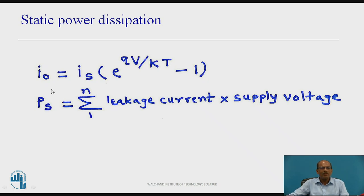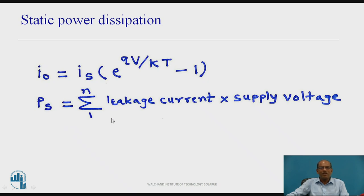The current through the diode is given by I₀ = IS × (e^(QV/KT) − 1), where IS is the reverse saturation current, Q is the electronic charge, V is the voltage across the diode, K is Boltzmann's constant, and T is temperature in absolute degrees Kelvin. Static power dissipation is the leakage current multiplied by the supply voltage, given by the summation from 1 to N of leakage current multiplied by supply voltage, where N is the number of devices.